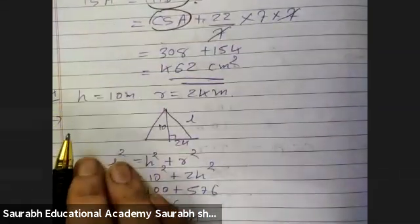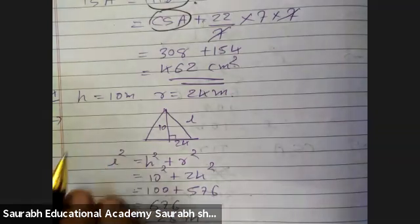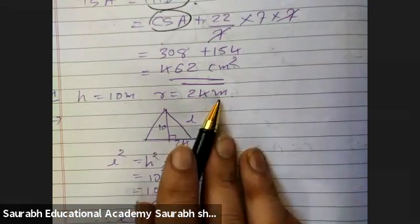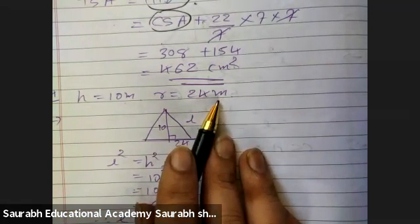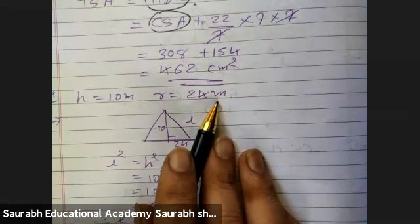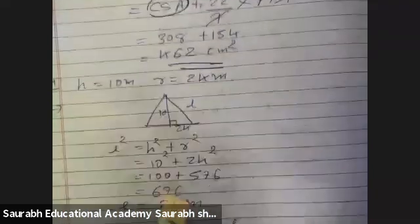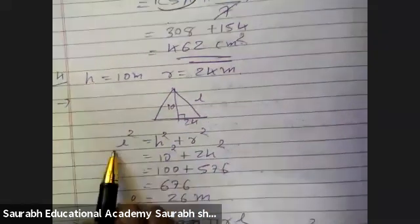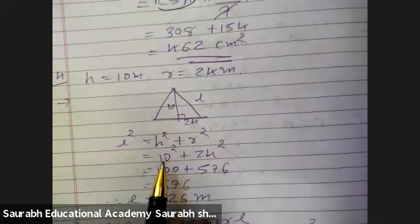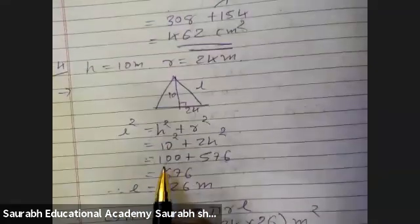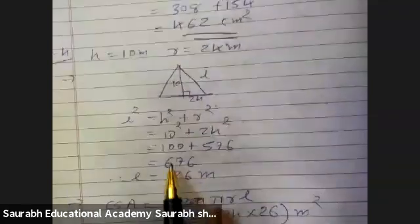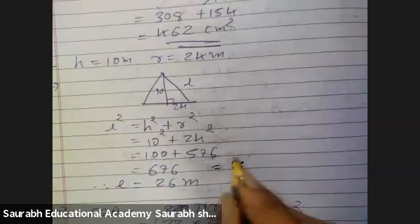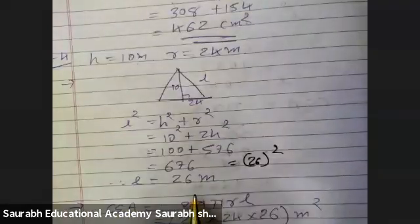Question number 4: A conical tent with height 10 meter and radius 24 meter. Find the slant height. L squared equals H squared plus R squared, so 10 squared plus 24 squared equals 100 plus 576, which is 676. That is 26 squared. Therefore L equals 26 meter.